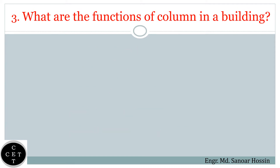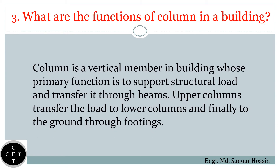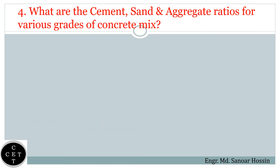Question number three: What are the functions of a column in a building? A column is a vertical member in a building whose primary function is to support structural load and transfer it through beams. Upper columns transfer the load to lower columns and finally to the ground through footings.